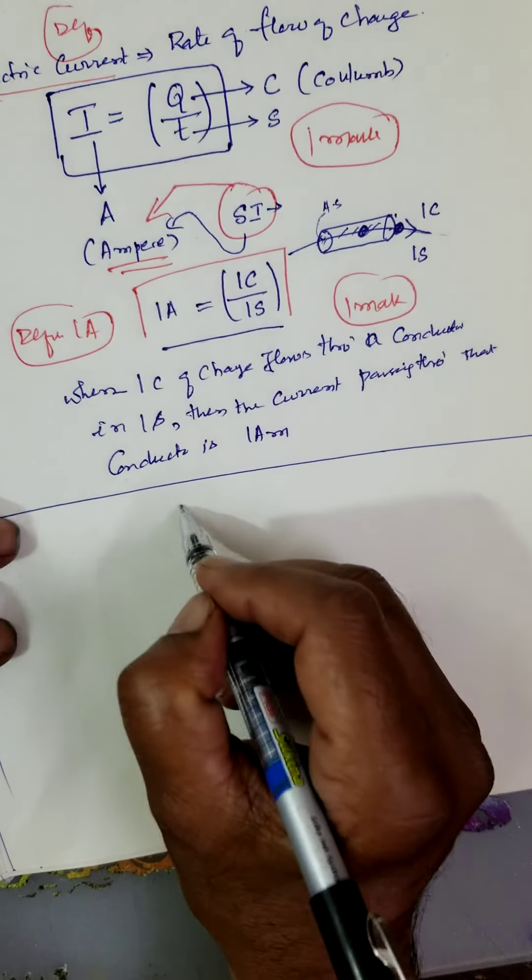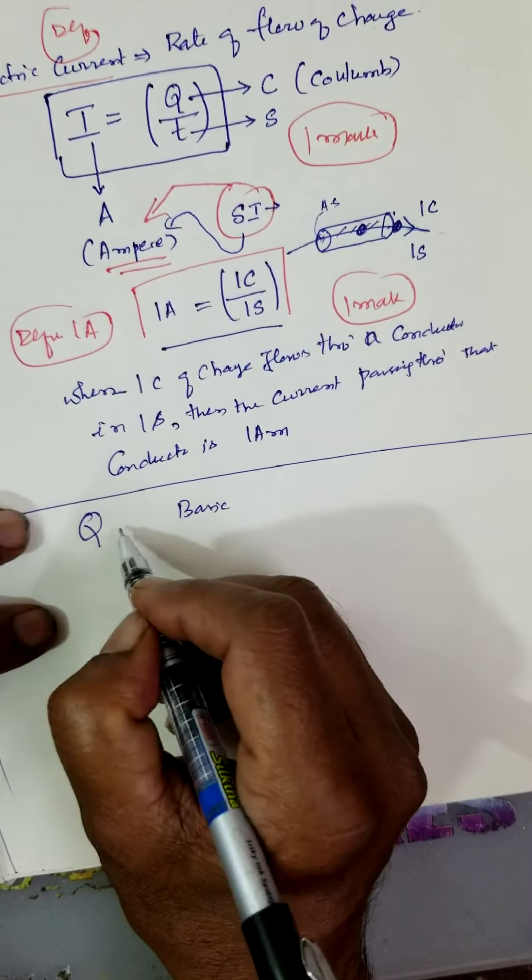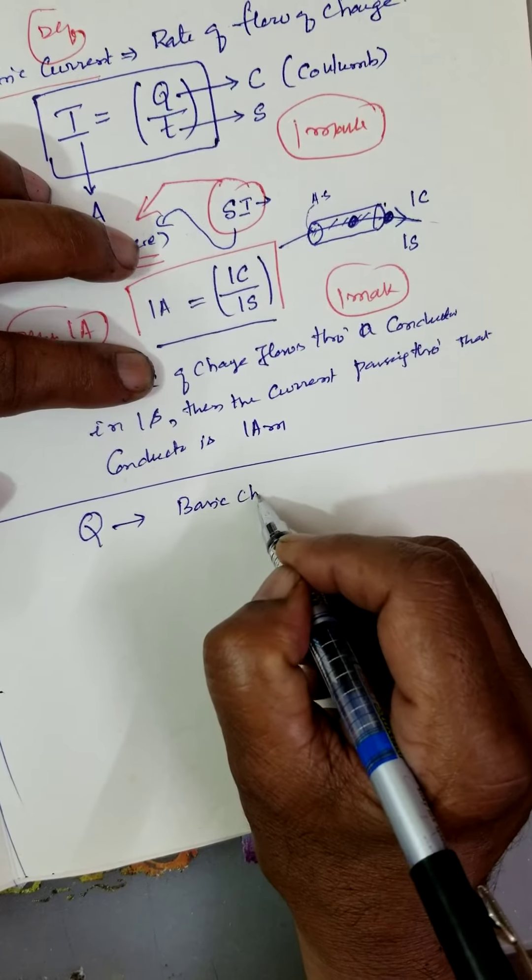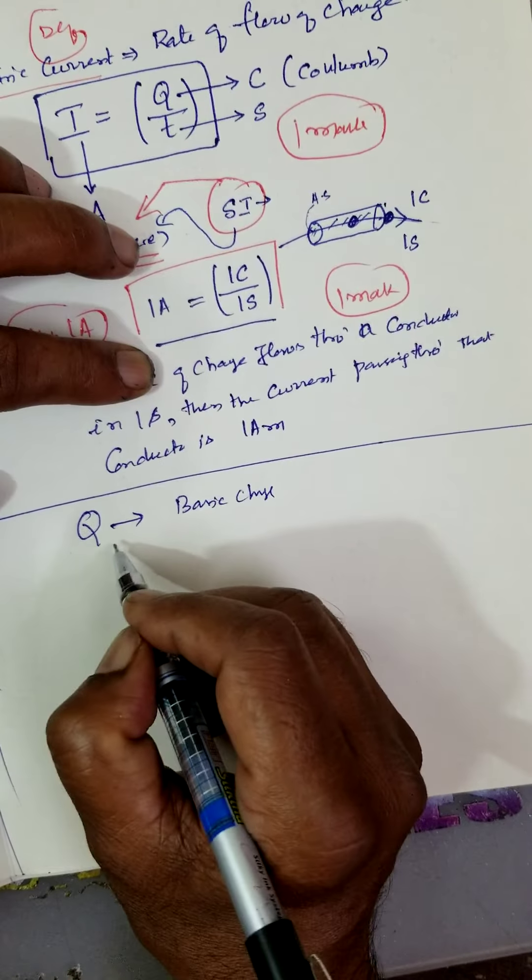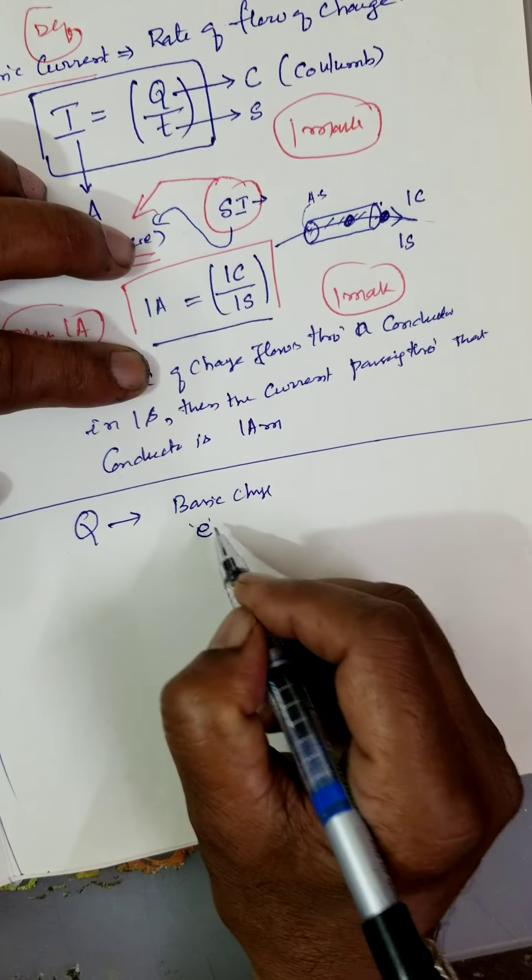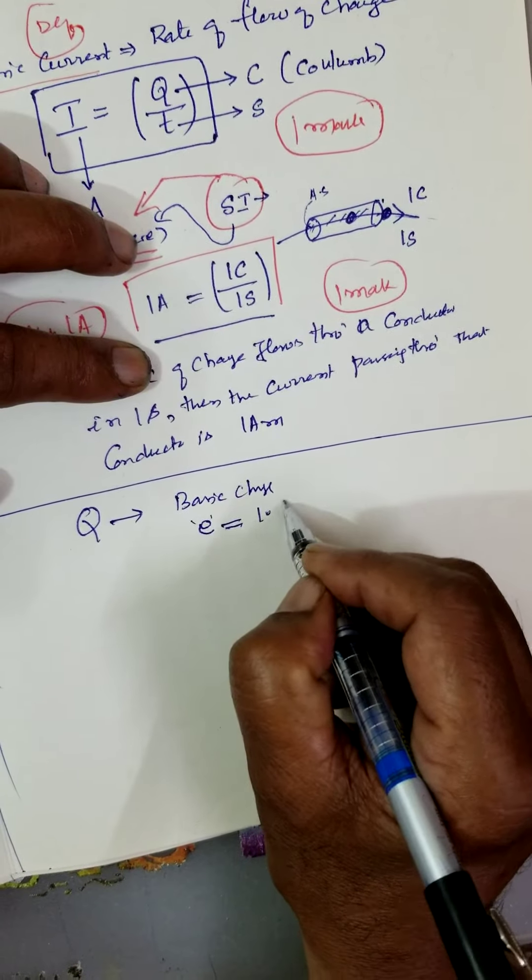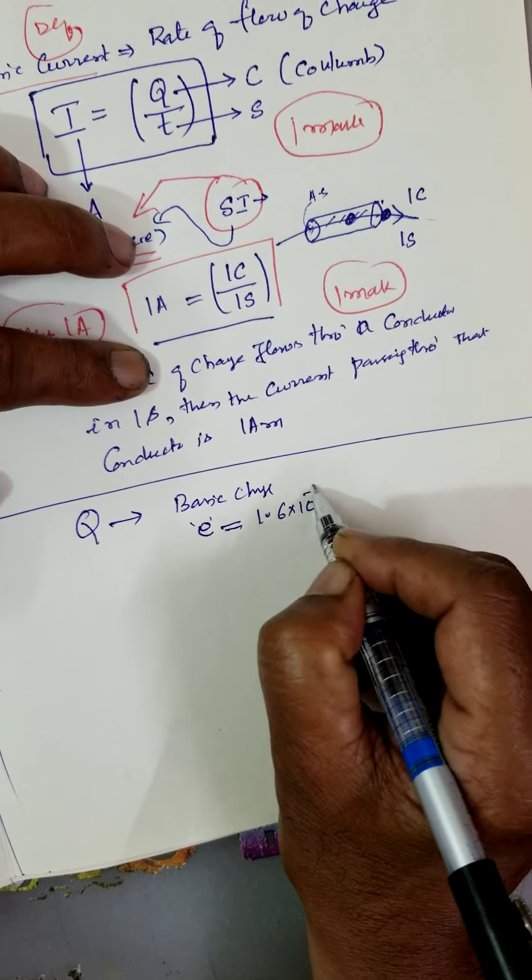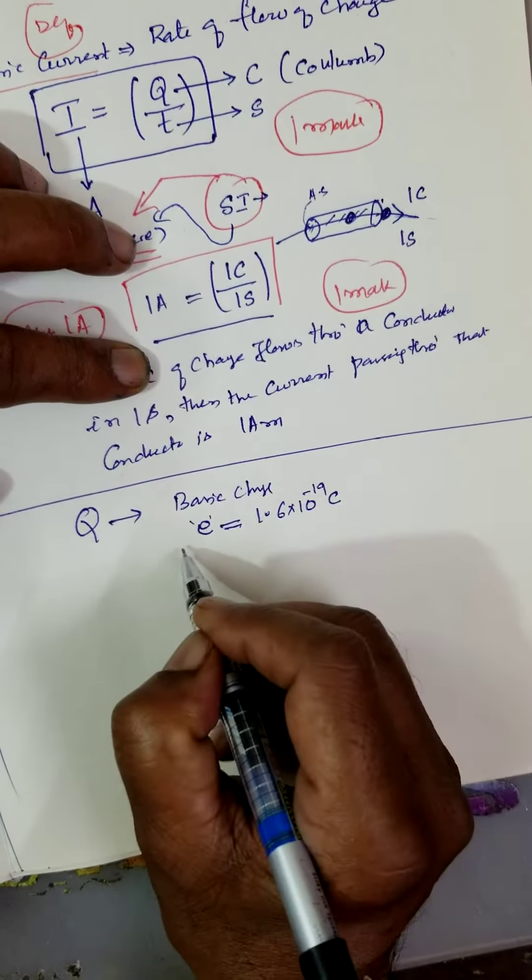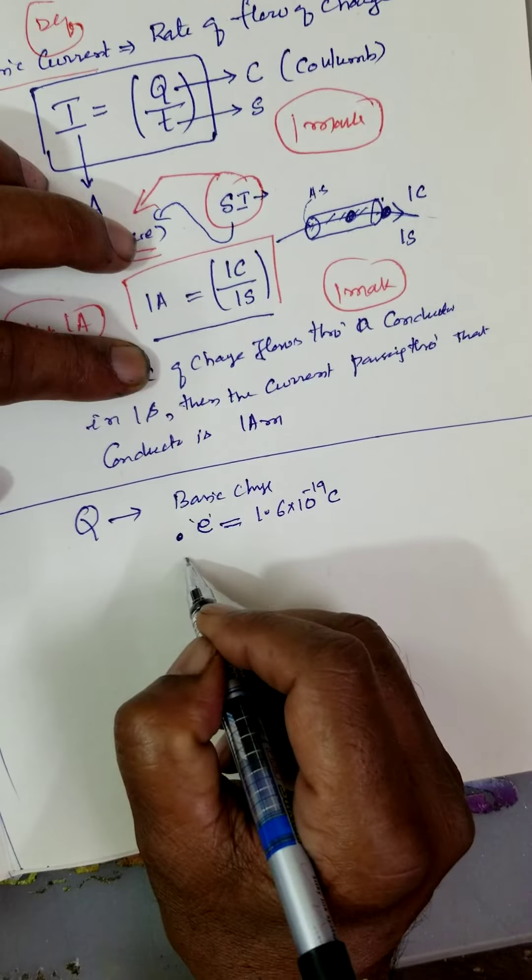Now, what is a basic charge? Q represents charge. This is not electric charge, basic charge. Now basic charge, this one coulomb, electron, one electron, electronic charge, it is called a basic charge. What is a unit of one electronic charge? 1.6 into 10 to the power of minus 19 coulomb. It is only one charge on one electron. How many electrons form one coulomb?